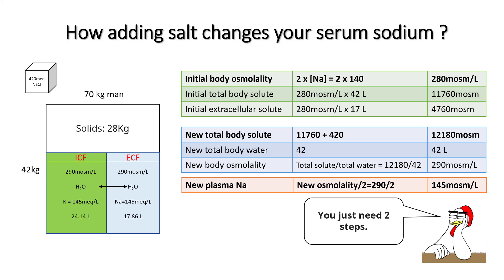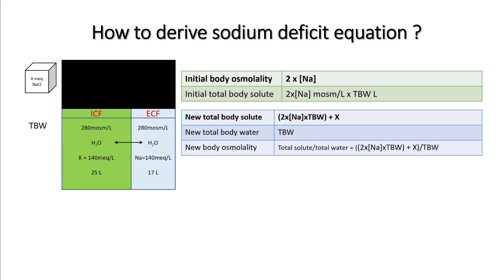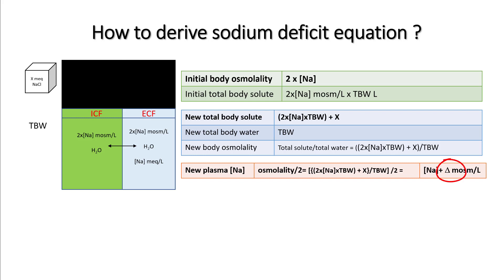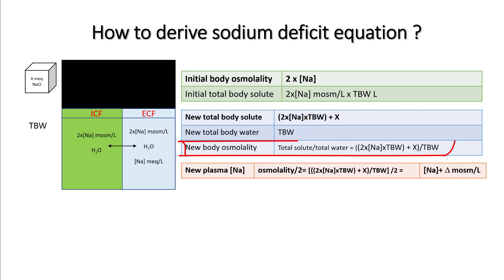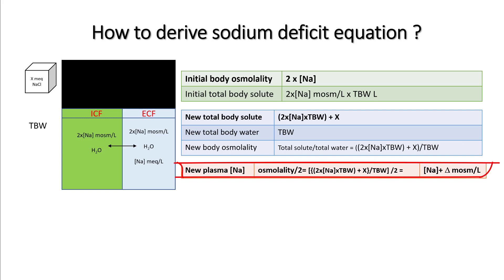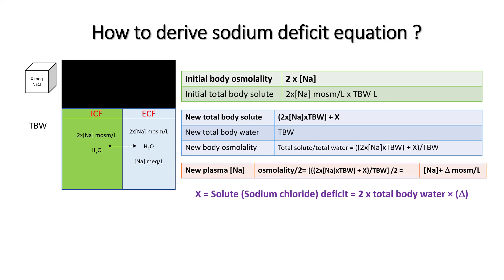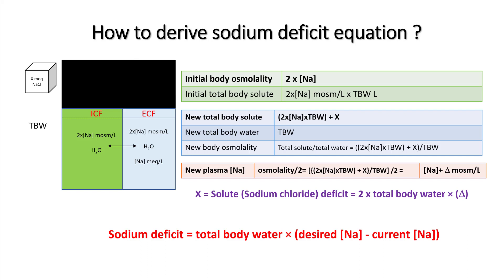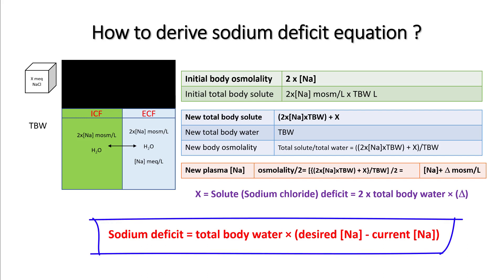To find the new plasma sodium you just need two variables: your new total body solute and your new total body water. Divide them to get new body osmolality, then divide by 2 to get new sodium. To derive the sodium deficit equation: if you add X mmol of sodium chloride and sodium changes by delta, your new total body solute is 2 × sodium × total body water + X, divided by the same total body water gives new osmolality. Solving for this, the total solute deficit is 2 × total body water × delta sodium, so sodium deficit = total body water × (target sodium − current sodium).